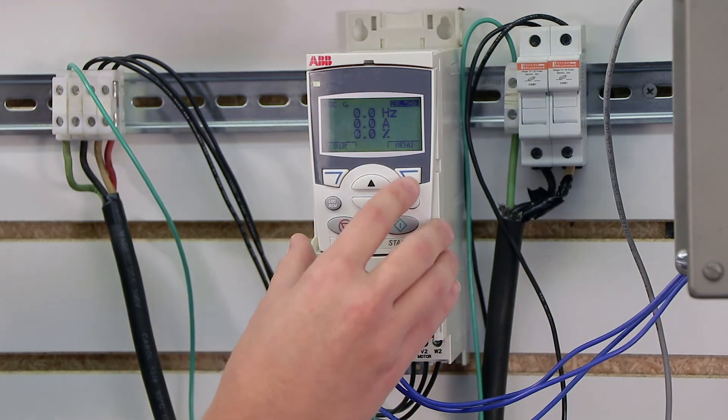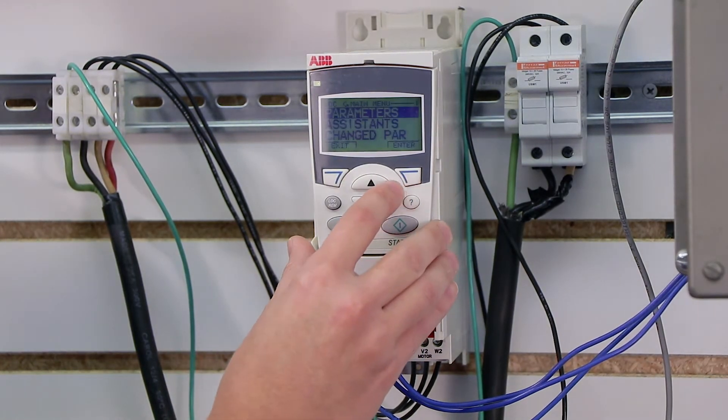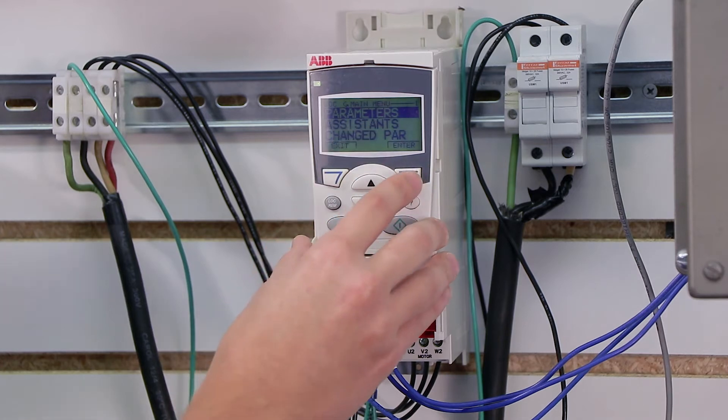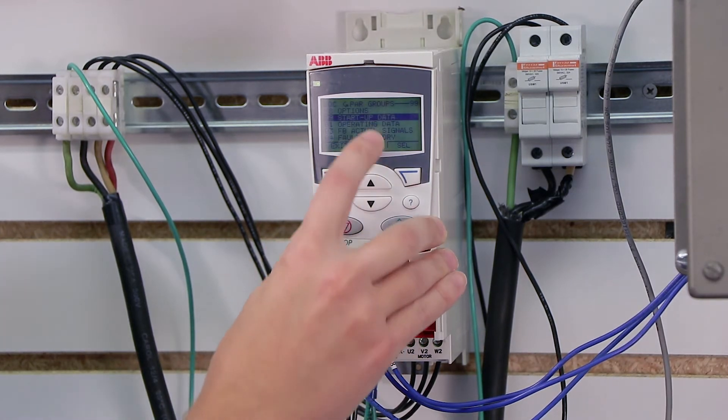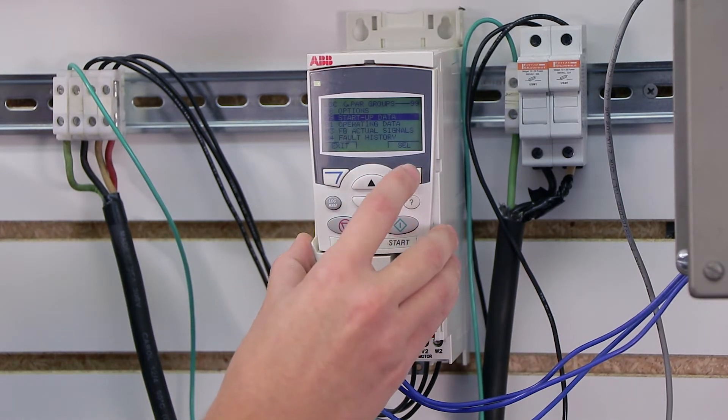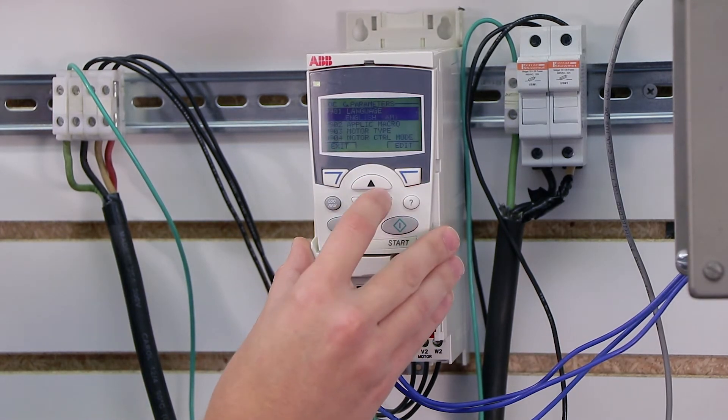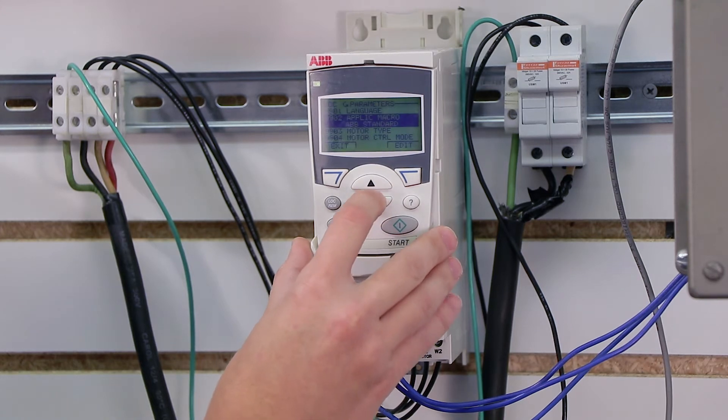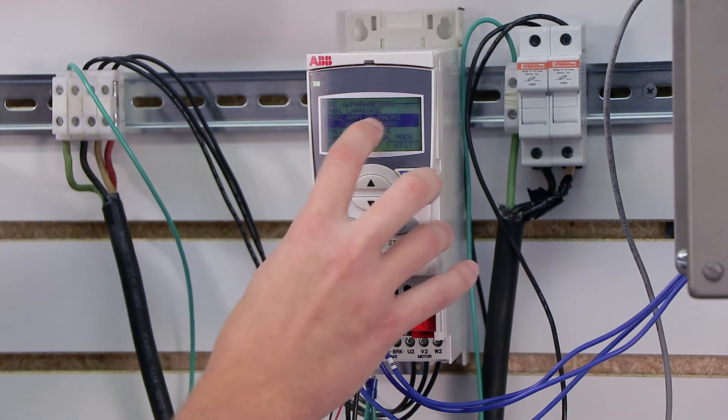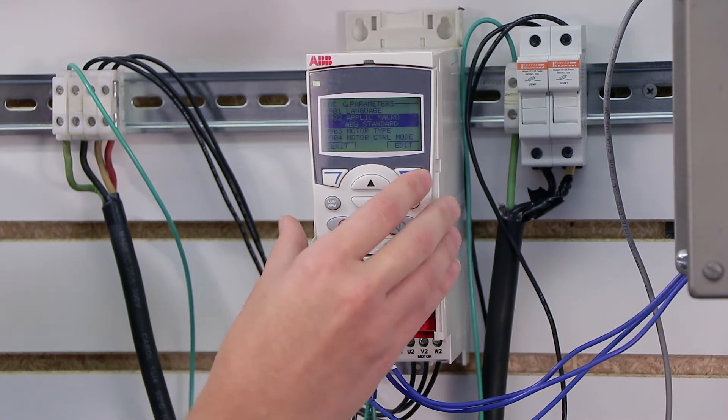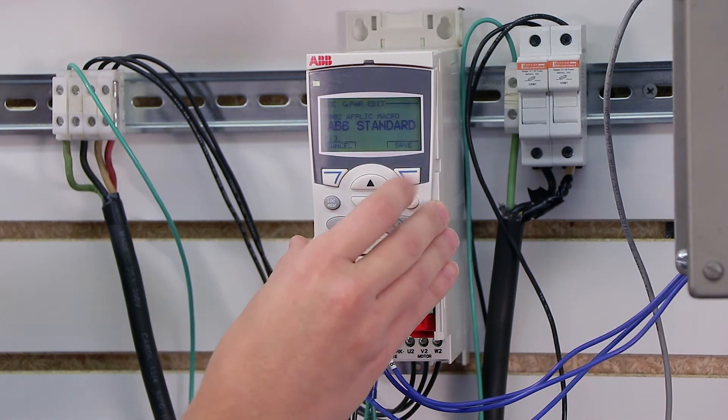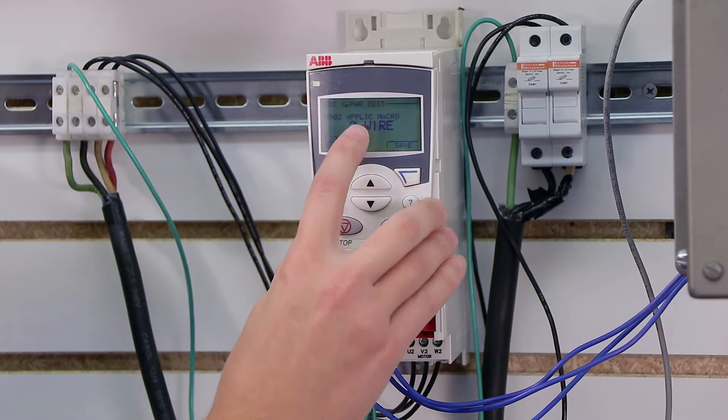So let's go ahead and go into the menu. We're going to press the menu button, and we're going to go to the parameters option. Then we're going to scroll down to startup data, which is parameter group 99, and we're going to click select. We're going to scroll down to parameter 9902, which is the application macro. As I said before, right now it's set up for the ABB standard, and we're going to click edit and we're going to switch that macro to three-wire.